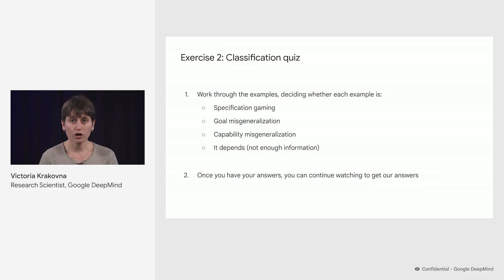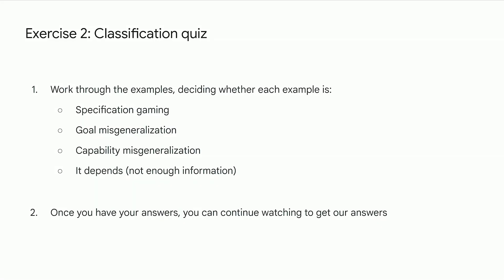If you go into your workbook under exercise 2, you will find a set of real examples of AI failures. For each of those, your task is to decide whether it's specification gaming, goal misgeneralization, capability misgeneralization, or maybe it depends and more information is needed. You can pause this recording here and come back after you take a stab at this exercise, and we'll go through the answers together.